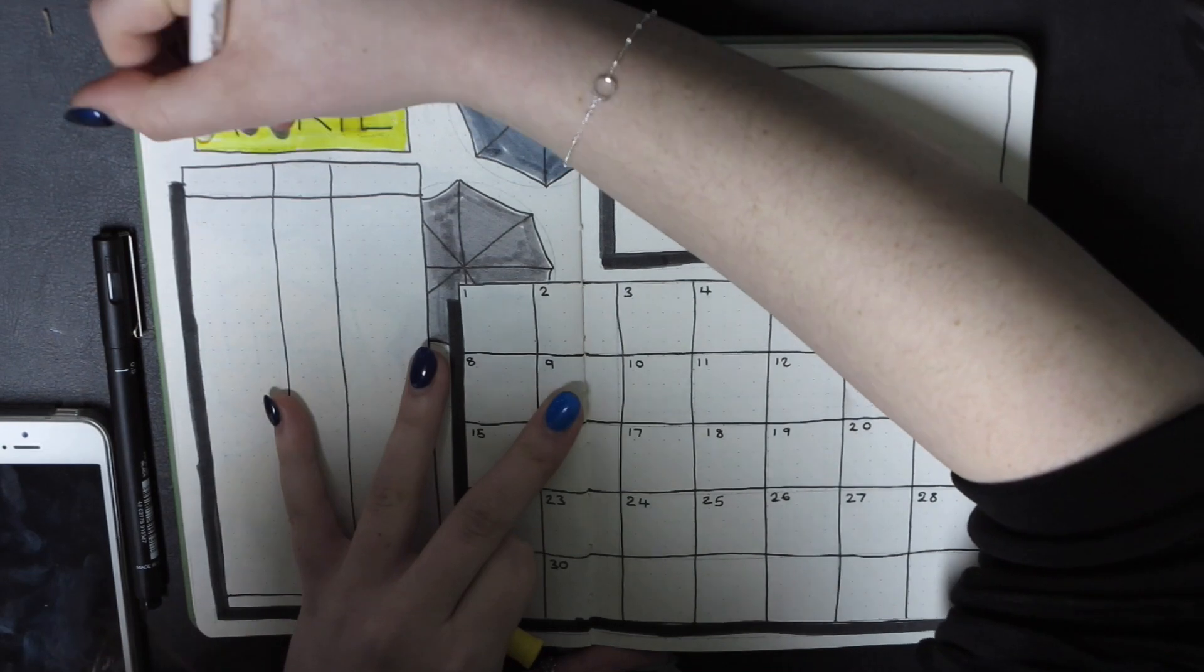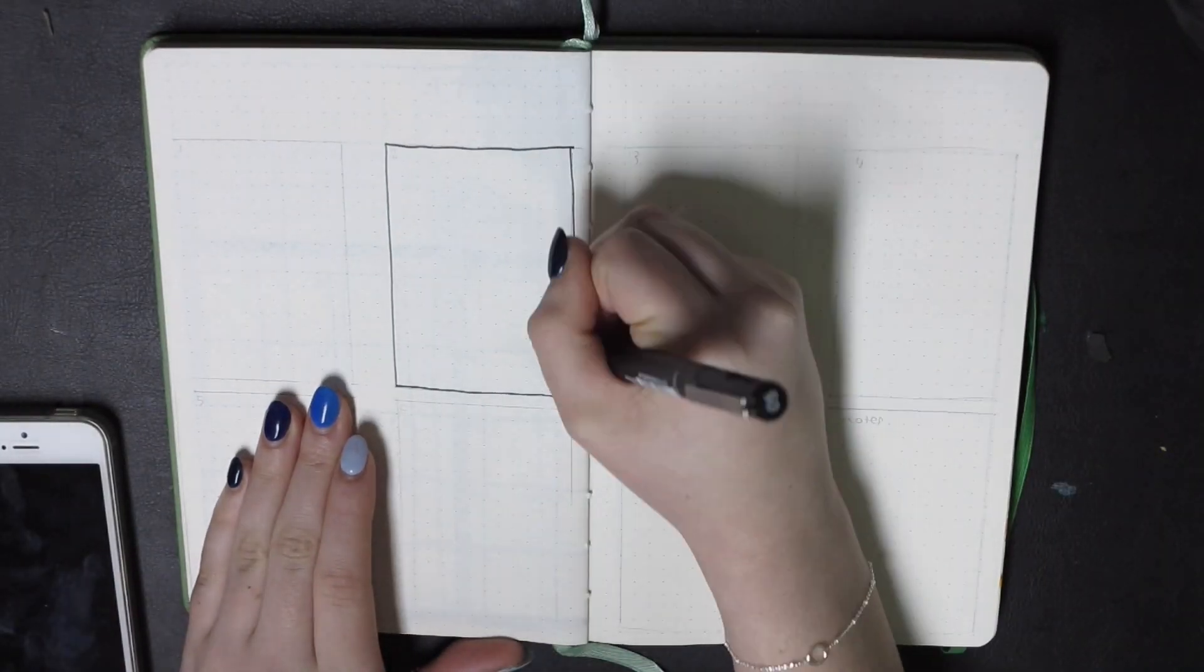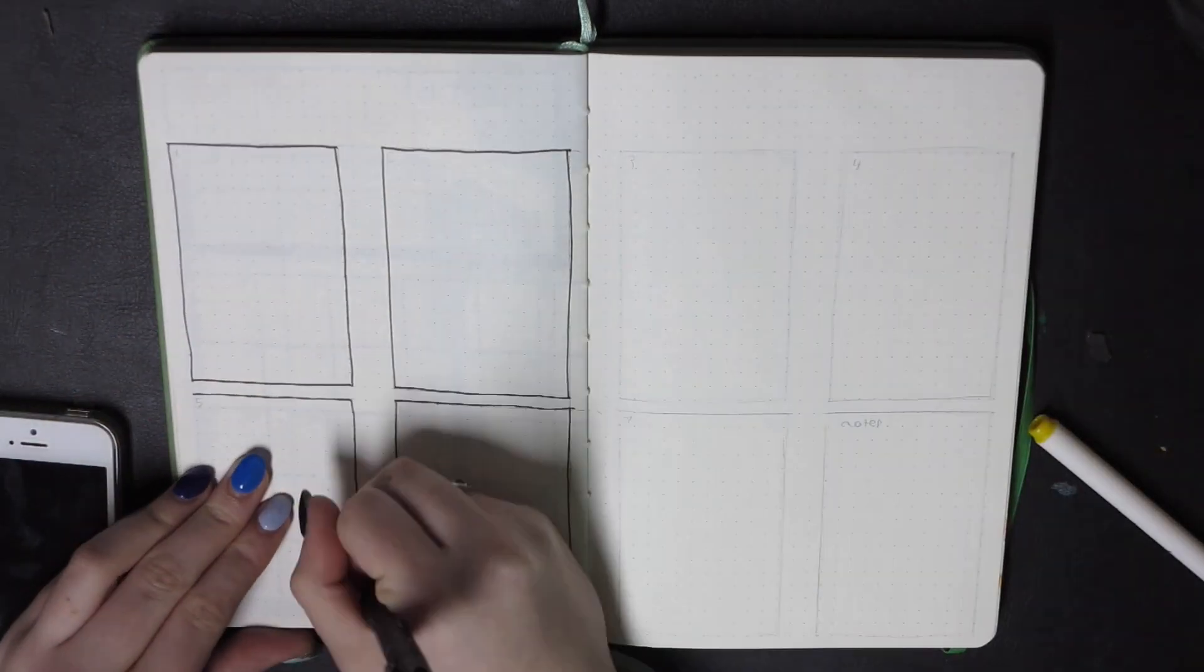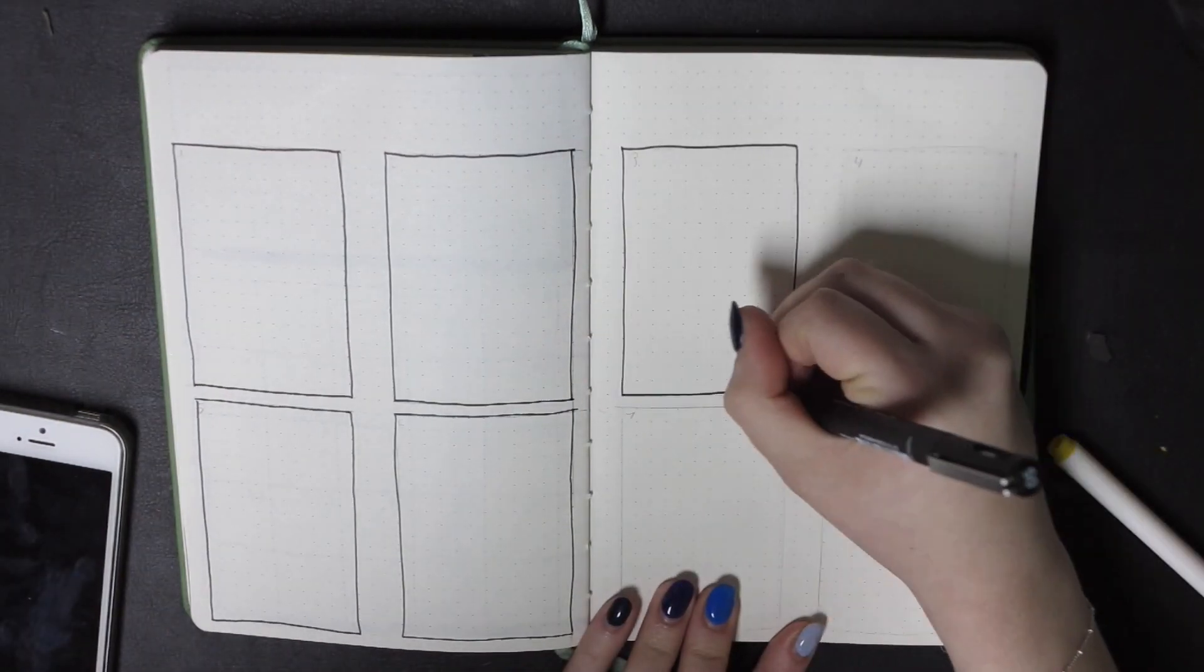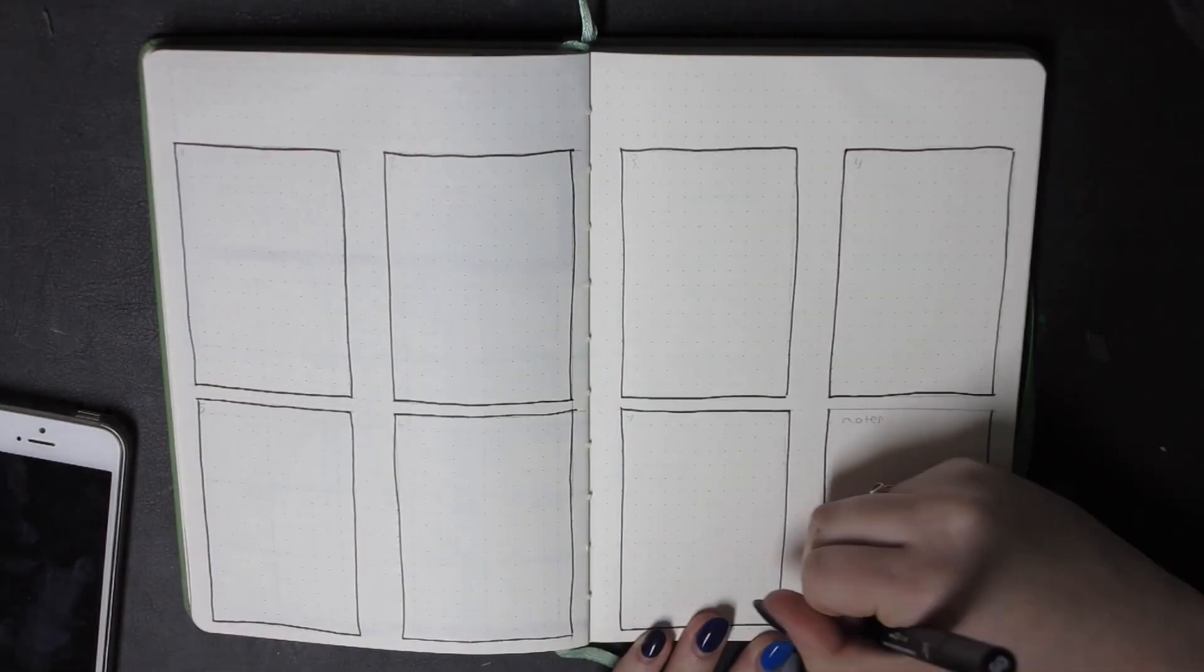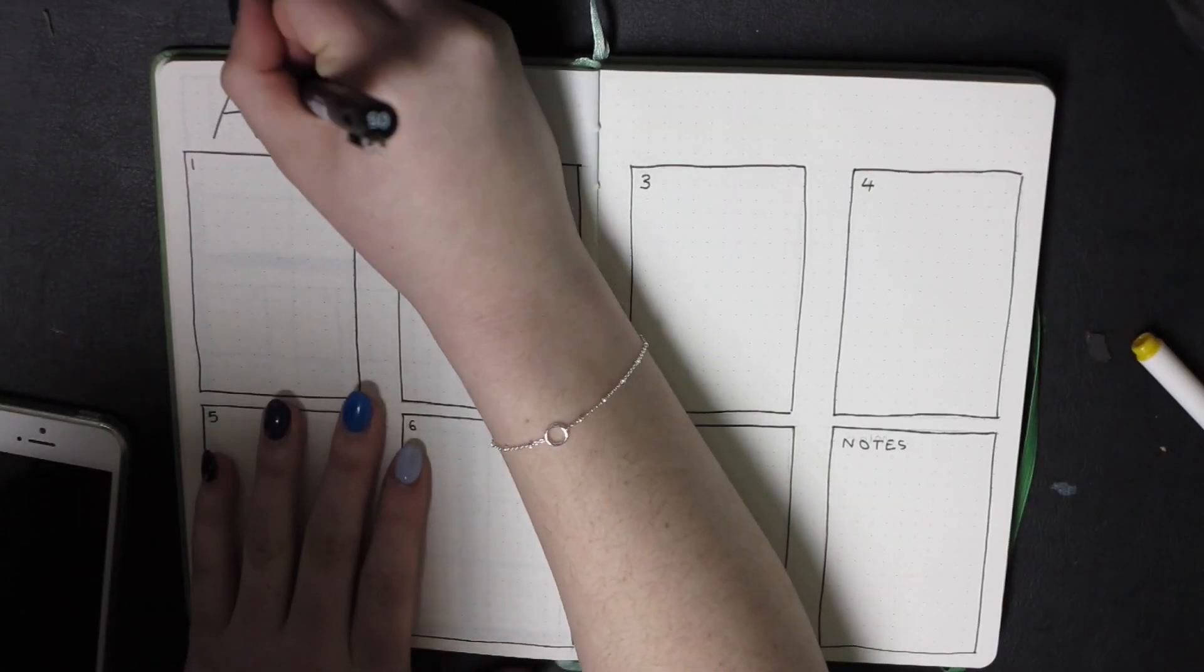Next is my diary section of the bullet journal. I did do a different layout this time, I'm trying to be a bit more experimental. So I did some boxes, four boxes each page, they're about the same size as a polaroid like I did for my polaroid pages, and then obviously numbered the pages.